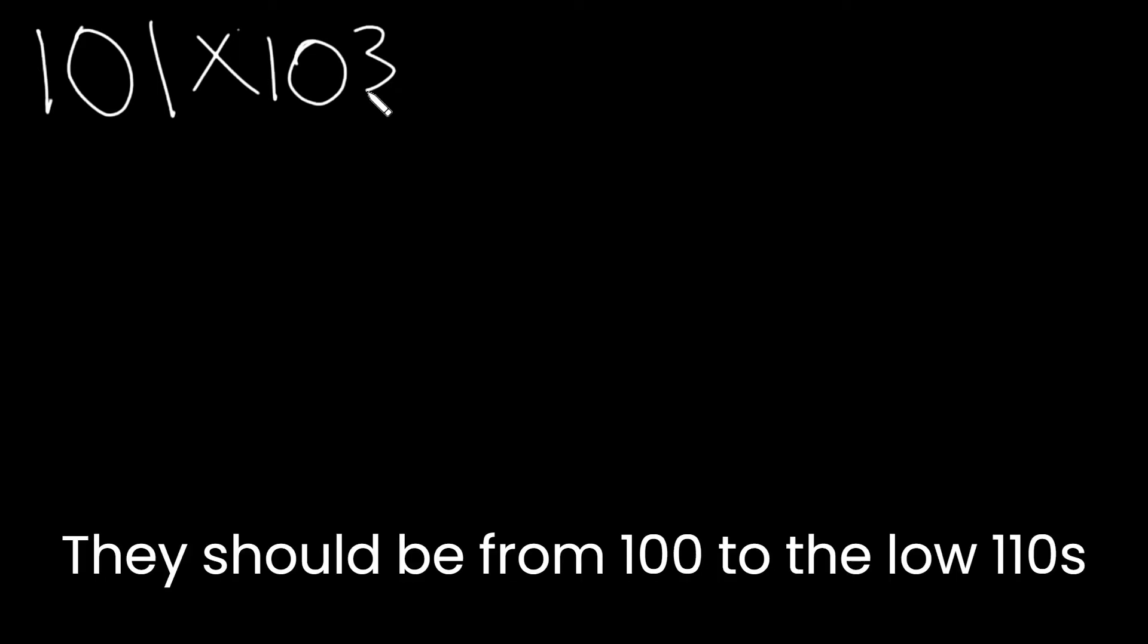Let's talk about how to multiply two numbers near 100 but over 100. These two numbers should be something like 101 and 103. They should be from 100 to the low 110s.